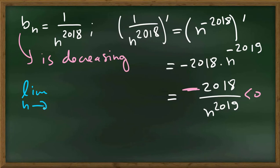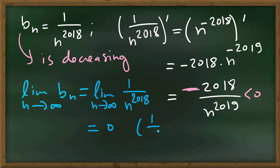What is the limit as n goes to infinity of b_n? It's the limit as n goes to infinity of 1 over n^2018. And that limit is 0. It's 1 over infinity, which is 0.